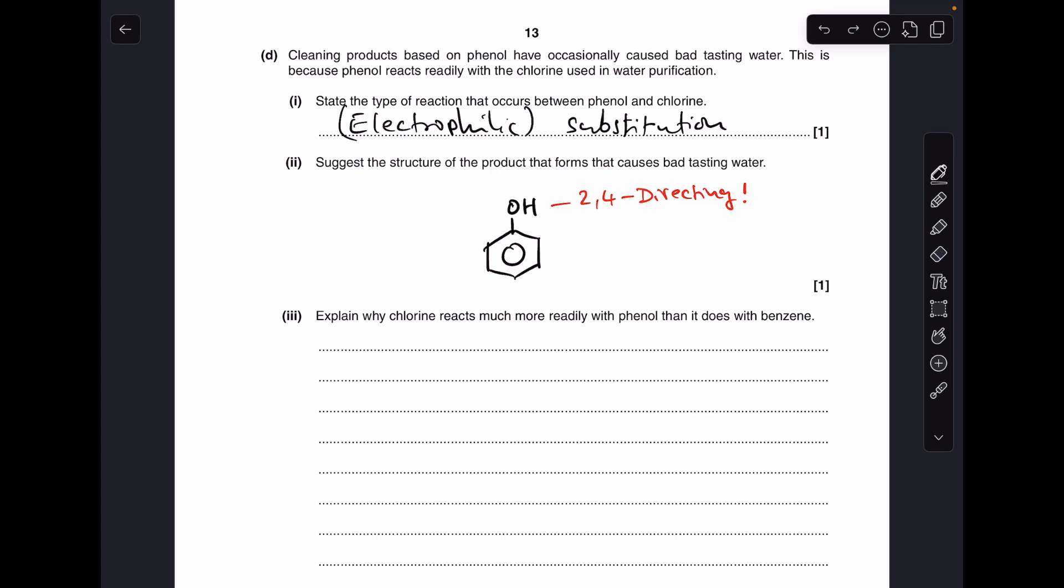Moving on to the next part, the product that's causing this bad taste in the water. So that's the phenol reactant with the chlorine. So there's a reminder there that the OH group on a benzene ring is 2,4-directing. So when the chlorine reacts, it's going to be sent to carbon 2 or carbon 4.